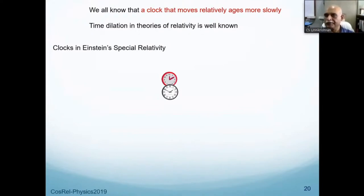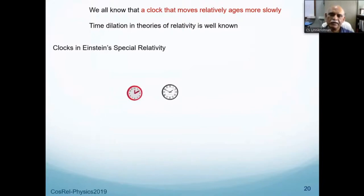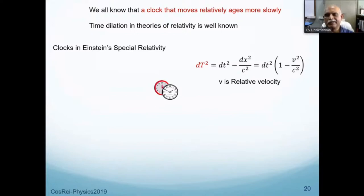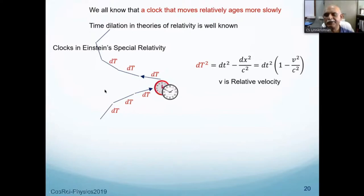Moving clocks age more slowly — this is the motional time dilation from special relativity. If a clock is moved relative to another and brought back, the time dilation is given by the integral of √(1 − v²/c²) dt along the trajectory. You integrate this elementary contribution for every step of the trajectory and sum all contributions to get the total time dilation.